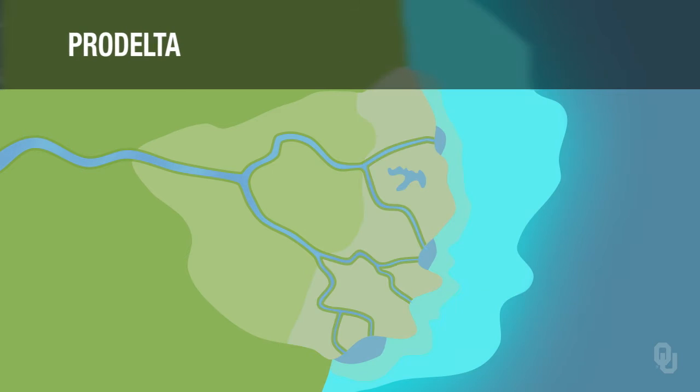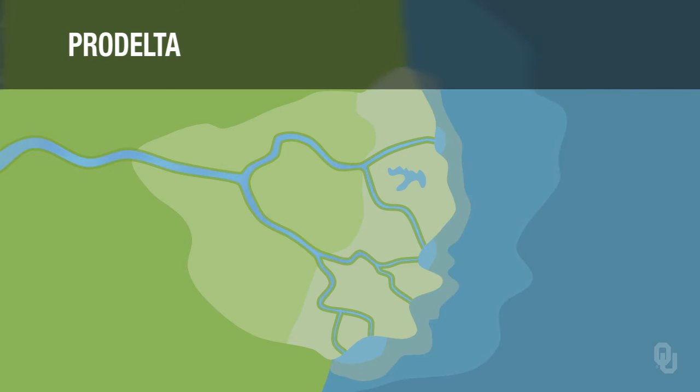And then there's the pro-delta. The pro-delta is out in front of the delta, and this is where you get most of the deposition of fine material like clay. Look at the virtual field trip to the Mississippi Delta to get a feel for the different environments and processes that operate on a delta.